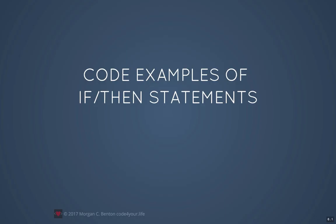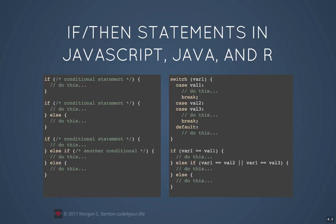Let's look at some code examples of if-then statements, starting with JavaScript, Java, and R, which all have very similar structures. A typical if-then statement is the word 'if' followed by a conditional expression in parentheses. If the expression is true, the code inside the curly braces will be executed. The if-else statement executes one block if the expression is true, otherwise it executes a second block. You can also string together multiple conditions using the else-if pattern.